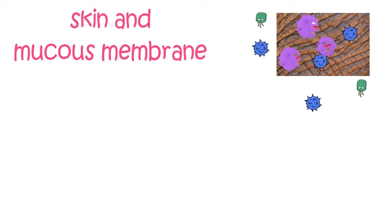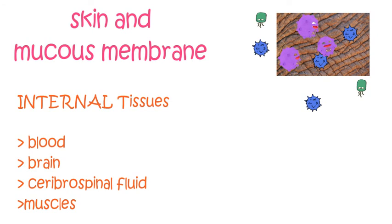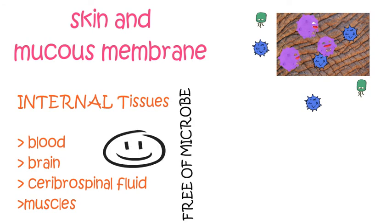However, in healthy humans, internal tissues like blood, brain, cerebrospinal fluid, and muscles are normally free of microorganisms. So that was just a brief introduction of normal microbiota of the human body.